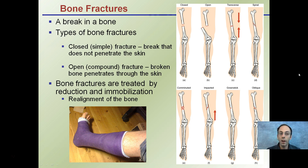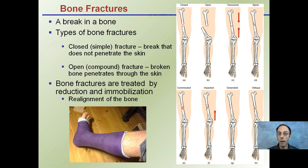Starting with bone fractures in general, a bone fracture is simply a break in a bone. Two main classifications are closed or simple fractures, which are breaks that do not penetrate the skin. Another type is called an open or compound fracture, where the broken bone penetrates through the skin. Bone fractures are treated by reduction and immobilization, which allows realignment of the bone. The time someone stays in a cast depends on the type of fracture, the age of the individual, and the duration needed for realignment.